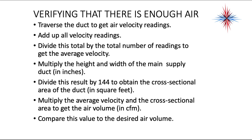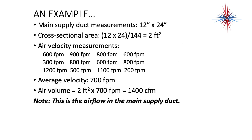To verify there's enough air, you want to traverse the duct to get air velocity readings. Add up all the air velocity readings and divide by the number of readings to get the average velocity. Multiply the height and width of the main supply duct in inches, then divide that result by 144 to obtain the area in square feet. Multiply the average velocity by the cross-sectional area to get the air volume, then compare this to the desired air volume.